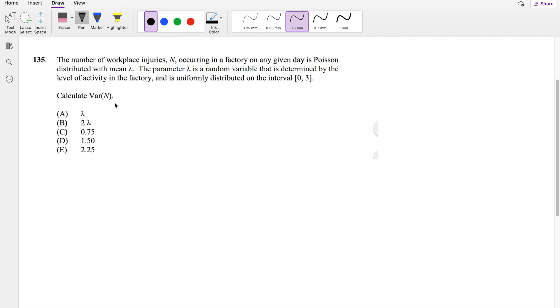So they ask you to calculate the variance of n. By the law of total variance, we know that this is equal to the variance of expectation of n given lambda, plus the expectation of variance of n given lambda.